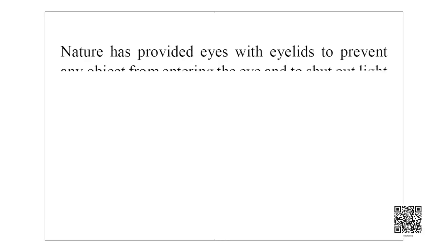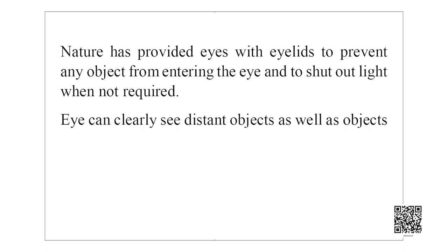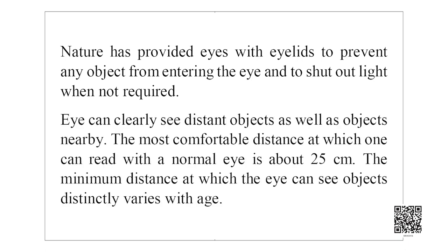Nature has provided eyes with eyelids to prevent any object from entering the eye and to shut out light when it is not required. Our eye can clearly see distant objects as well as objects nearby. The most comfortable distance at which one can read with a normal eye is about 25 centimeters. The minimum distance at which the eye can see objects distinctly varies with age.